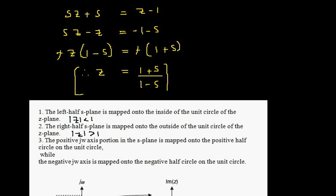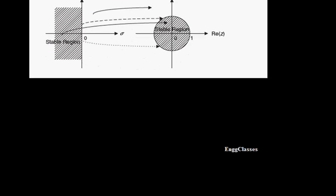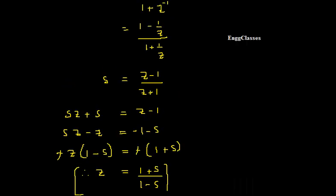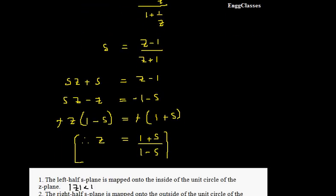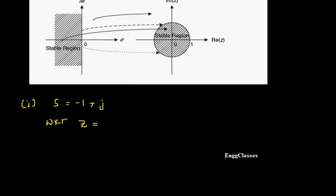Now we will verify these properties. The first point is s equal to minus 1 plus j. Using the expression z = (1 + s) / (1 - s), substituting s = -1 + j: the numerator becomes 1 + (-1 + j) = j, and the denominator becomes 1 - (-1 + j) = 2 - j. So z = j / (2 - j).